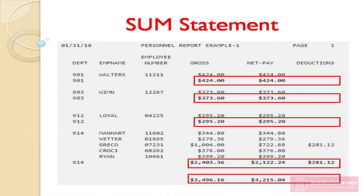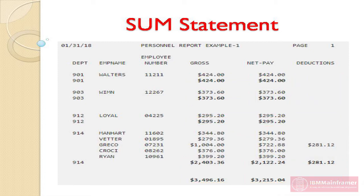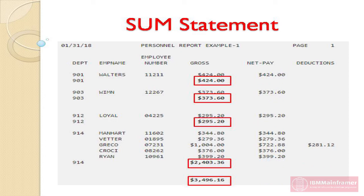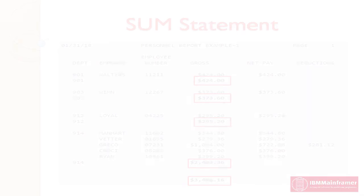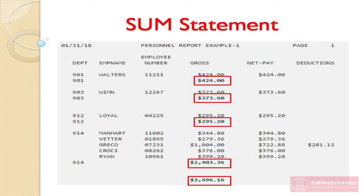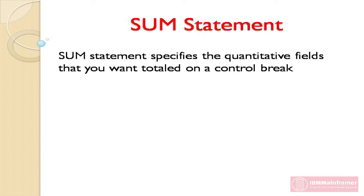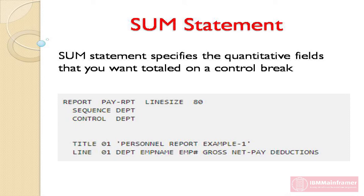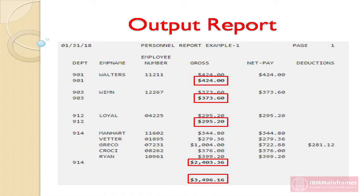Suppose that you do not want totals for gross, net pay, and deductions at each control break. You only want a total for gross, so you can get an idea of what the salary expense is. You can override the Control statement — which normally totals all quantitative fields — with the Sum statement. The Sum statement specifies the quantitative fields that you want totaled on a control break. Using a Sum statement ensures that only fields specified on the Sum statement are totaled. We have modified the program so that only the gross pay has a total. Now, gross is the only field that is totaled.